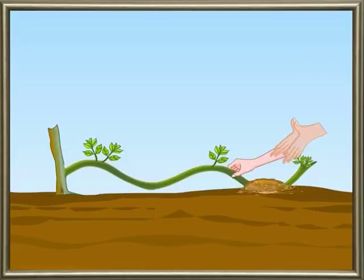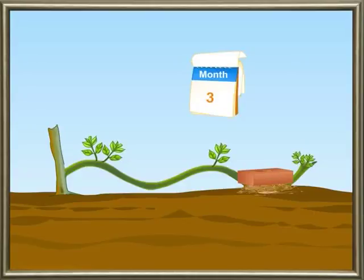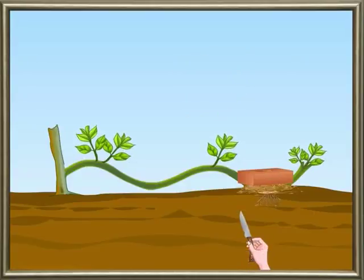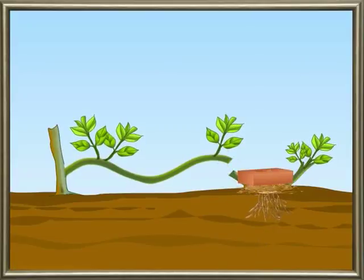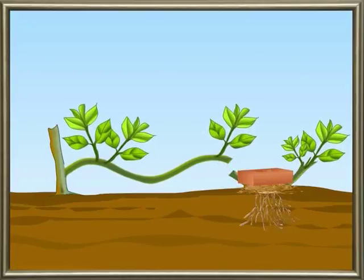A stone or brick is placed on it so that it is held in position. It develops roots and leaves in 2 to 4 months. This branch is cut off from the parent plant and it grows into a new plant.